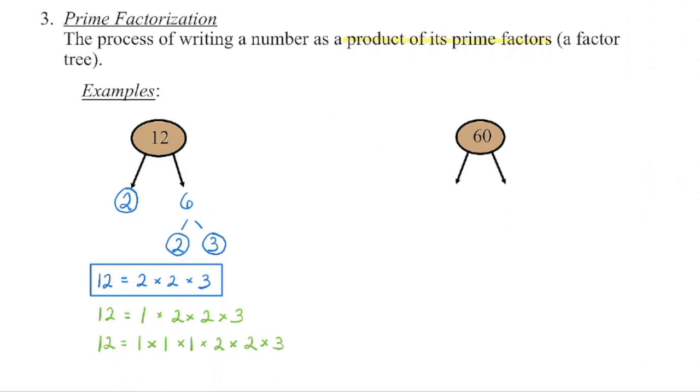And if a prime number by definition has exactly 2 factors — 1 times itself — we can see that 0 is also not going to be prime. Because I can write 0 as a product of 0 times 1, 0 times 2, 0 times 3, 0 times 4, 0 times 100, 0 times negative 100. There are clearly more than exactly 2 factors.